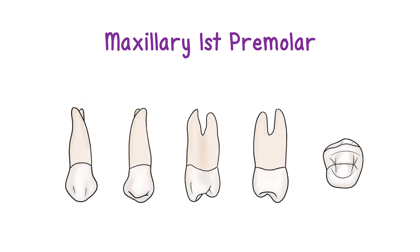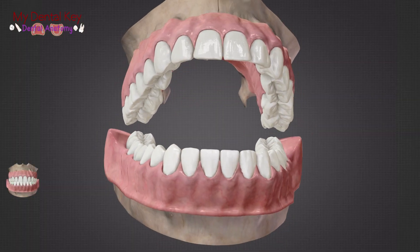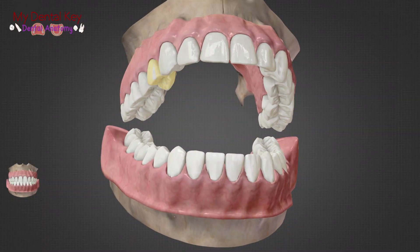In this video we will be covering maxillary first premolars. The maxillary first premolars are tooth numbers 5 and 12 in the universal numbering system. We'll be discussing tooth number 5 today.